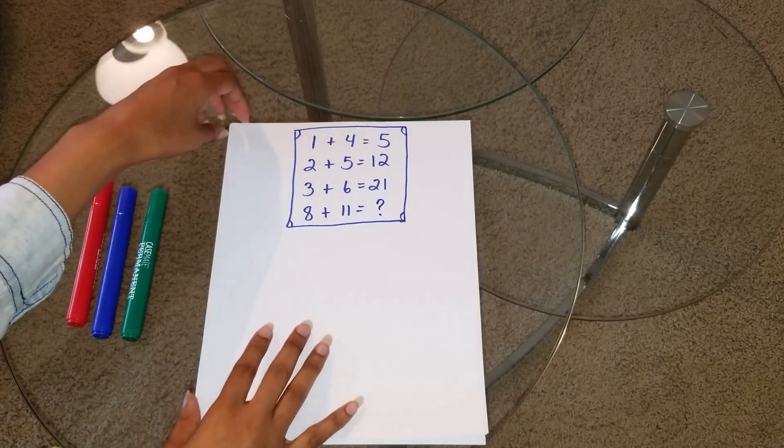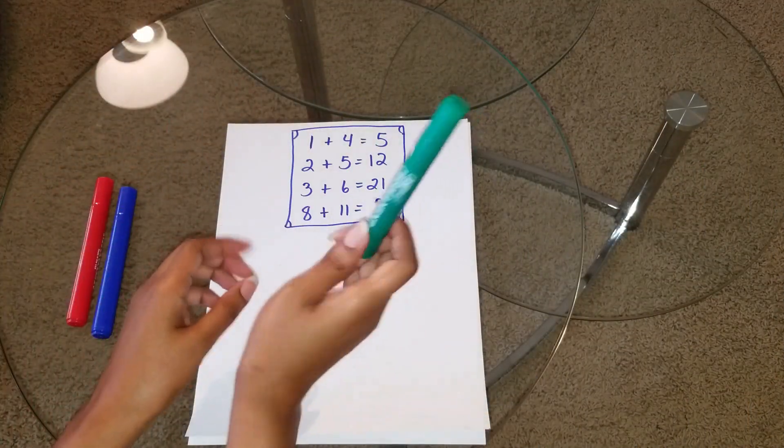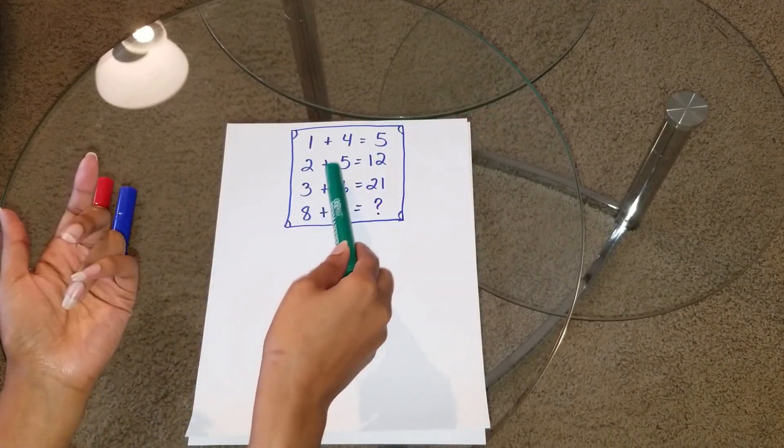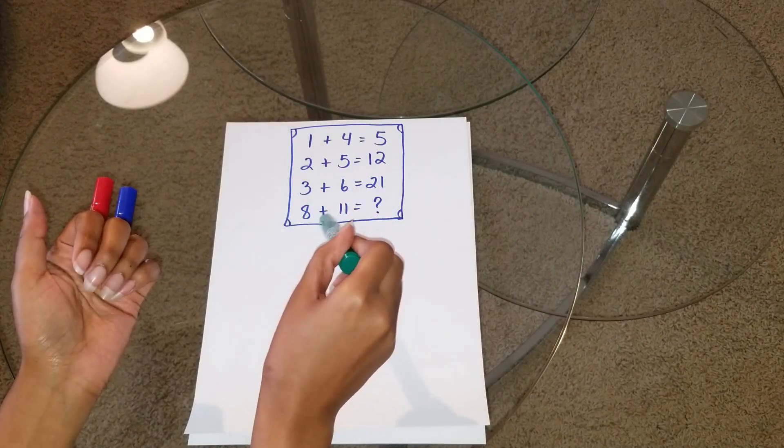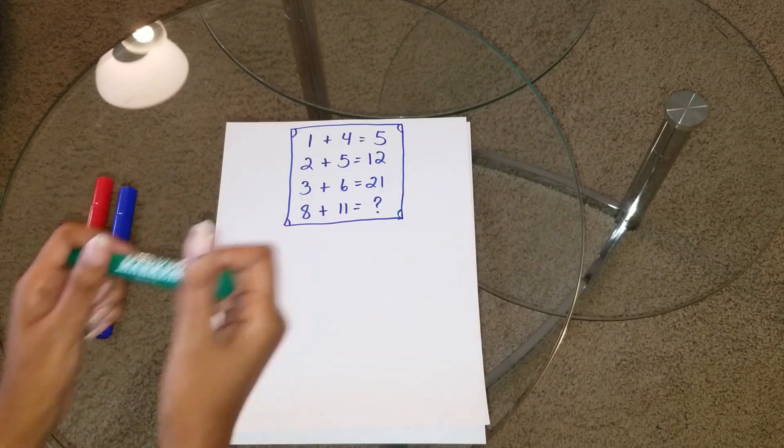Okay, y'all. So, here is the riddle. 1 plus 4 equals 5. 2 plus 5 equals 12. 3 plus 6 equals 21. And 8 plus 11 equals what? Alright.